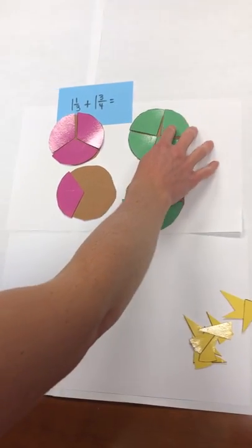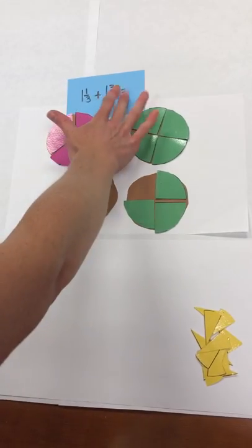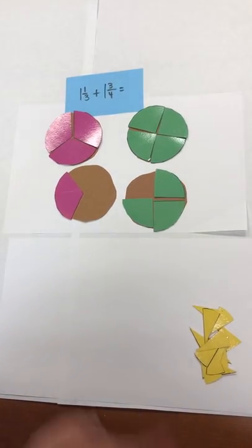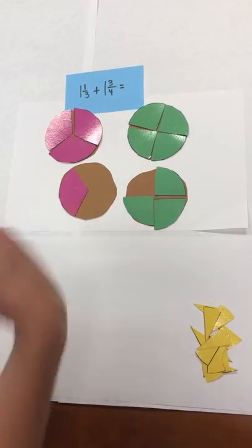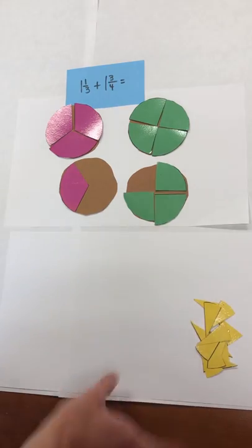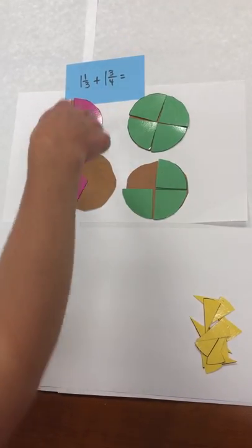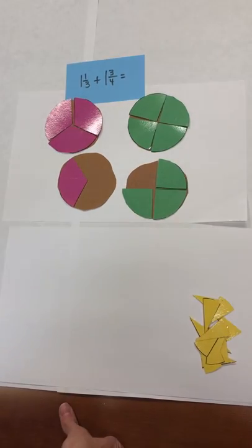Let's look at one last problem before we move to the second video. This is a mixed number plus a mixed number. We've represented one and one-third, and I've pulled out the pieces to determine that the pinks would be thirds and the greens would be fourths. So one and one-third is represented, one and three-fourths is represented.